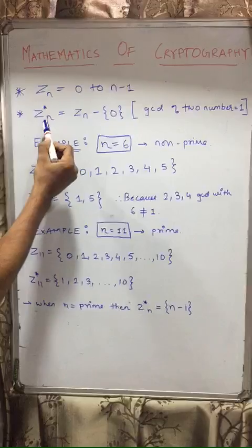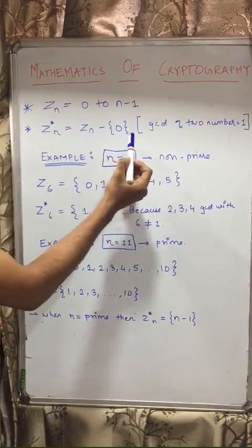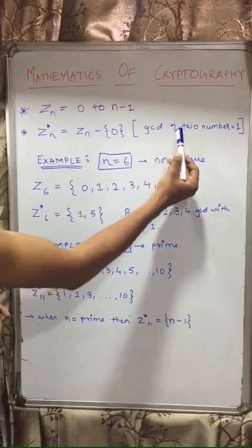And now it's Z star n, so it will be Zn minus 0, where gcd of two numbers should be equal to 1.